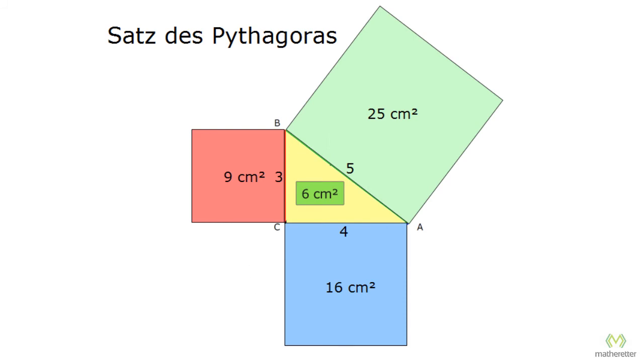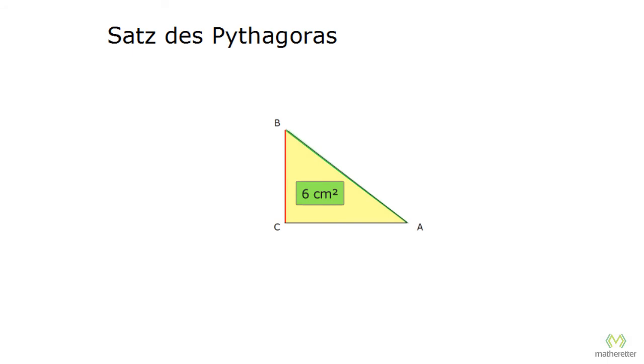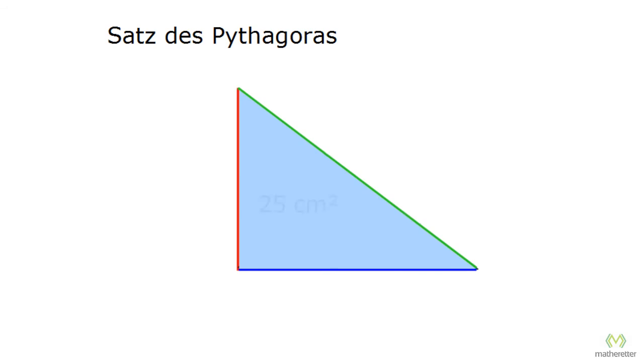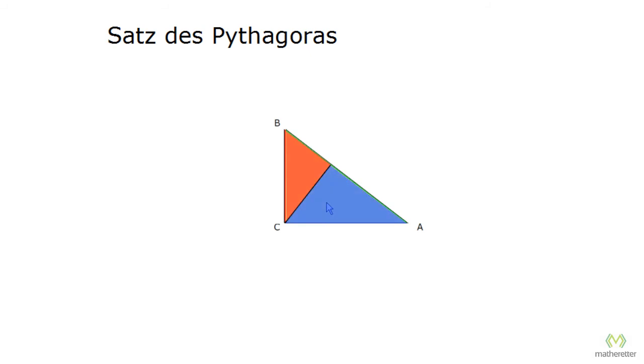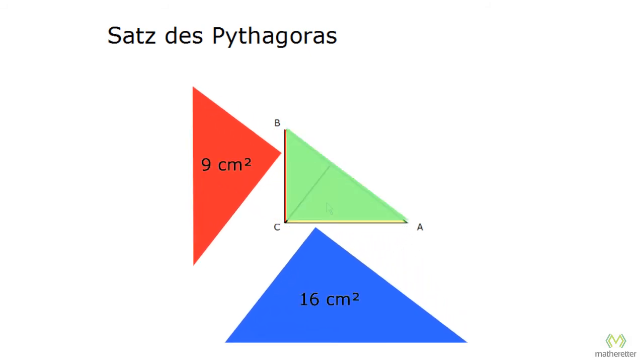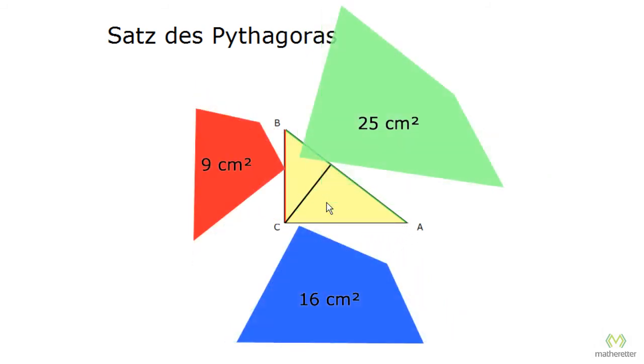Here again is our small triangle with 6 square centimeters. And here we have the 9 square centimeters, here the 16, and here the 25. And if we now expand our yellow triangle from 6 square centimeters to 25 square centimeters, then we get the 25 square centimeters for the entire triangle, for the small triangle 9 square centimeters, and for the other triangle 16 square centimeters. Their shape was changed, but the area remained the same.